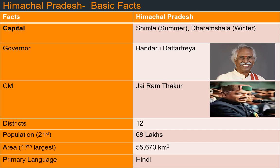Now let's talk about some basic facts. Its capital is Shimla. Its governor is Bandaru Dattatreya, who was also a Lok Sabha member from Secunderabad from 2014 to 2019, and from 2019 onwards he is the governor of Himachal Pradesh. Chief Minister is Jairam Thakur, and this is his first time as Chief Minister. The total number of districts is 12. Largest district area-wise is Lahul Spiti, and lowest district area-wise is Hamirpur. Largest district population-wise is Kangra and lowest population-wise is also Lahul Spiti. Population rank is 21st in India with 68 lakhs. Area rank is 17th largest in India at 55,673 square kilometers.